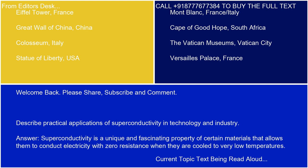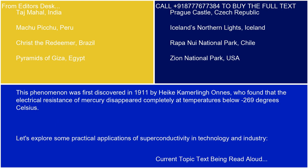Superconductivity is a unique and fascinating property of certain materials that allows them to conduct electricity with zero resistance when they are cooled to very low temperatures. This phenomenon was first discovered in 1911 by Heike Kamerlingh Onnes, who found that the electrical resistance of mercury disappeared completely at temperatures below minus 269 degrees Celsius. Let's explore some practical applications of superconductivity in technology and industry.